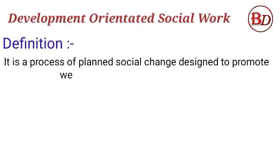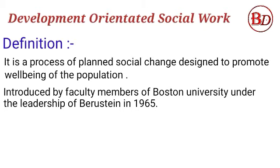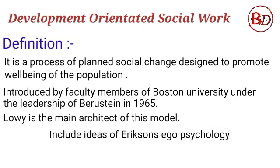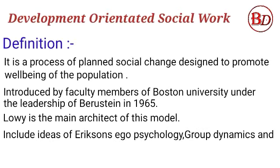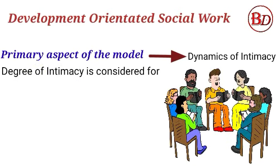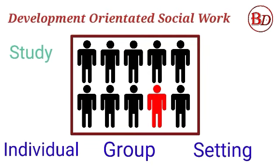Development-oriented social work can be defined as a process of planned change designed to promote the well-being of the population. This method was introduced by faculty members of Boston University under the leadership of Brousteen in the year 1965, with Chloe known as the main architect of this model. It includes ideas of Erickson's eco-psychology, group dynamics, and conflict theory. The primary aspect is the dynamics of intimacy and closeness among group members, with all three levels — individual, group, and setting — subjected to study, diagnosis, and treatment.